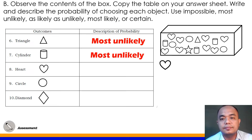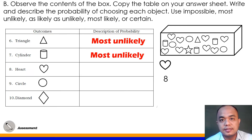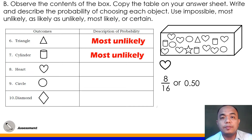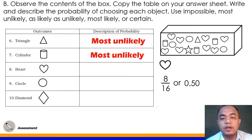Number 8: Heart. Inside our box we have 8 hearts out of 16. 8 divided by 16 equals 0.50, which is one-half. There is a 50% chance of picking a heart shape from the box. So the answer for number 8 is as likely as unlikely.